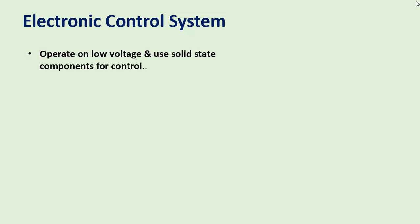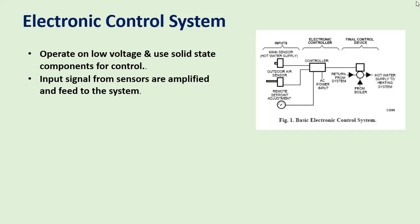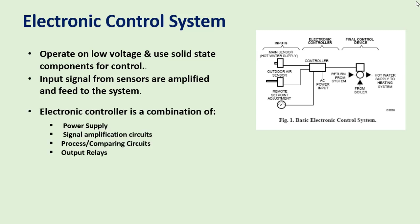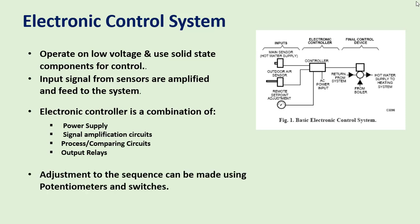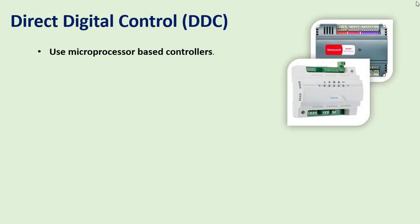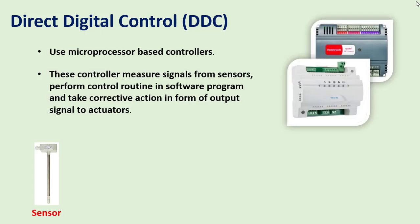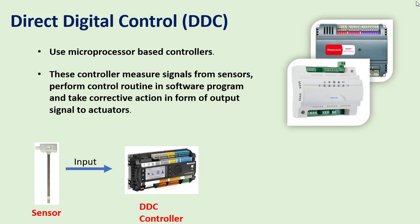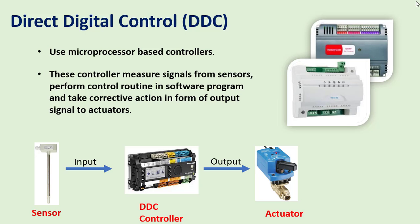An electronic control system operates on low voltage and uses solid-state components for control. Input signals from sensors are amplified and fed to the system. An electronic controller is a combination of power supply, signal amplification circuits, process comparing circuits, and output relays. Adjustments to the control sequence can be made using potentiometers and switches. Direct digital controls, or DDC, use microprocessor-based controllers that measure signals from sensors and perform control routines in a software program.